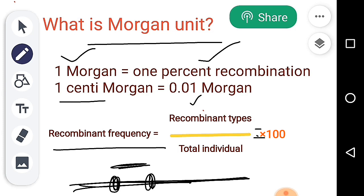The recombinant frequency equals the number of recombinant types divided by the total offspring. For example, suppose there are four children in total and two are recombinant types. So the total offspring is four, and we can calculate the recombinant frequency from that. This recombinant frequency can be used to see the linkage diagram.